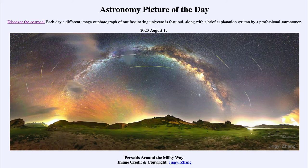Today's picture is titled Perseids Around the Milky Way. We see very prominently our Milky Way galaxy stretching across the sky — that is our own galaxy as we see it from within. We also see a number of meteors stretching across the sky.